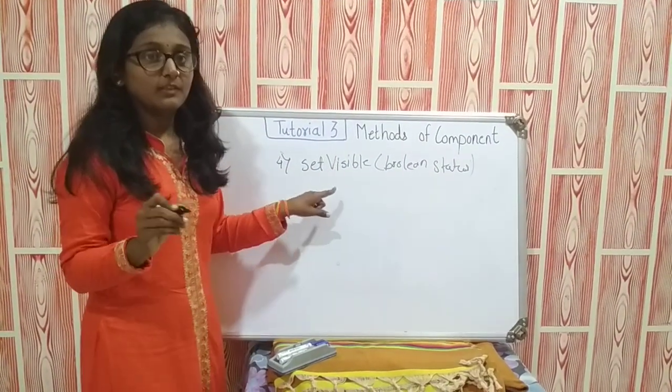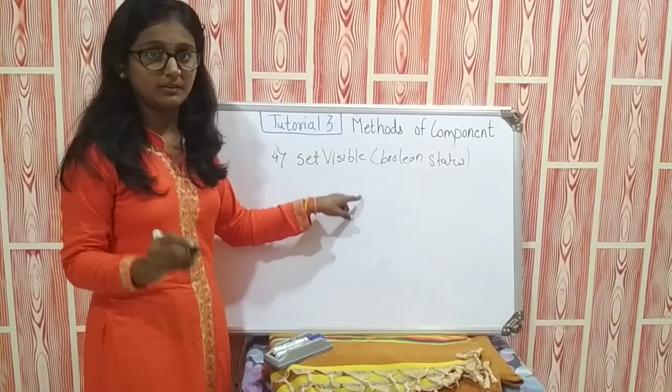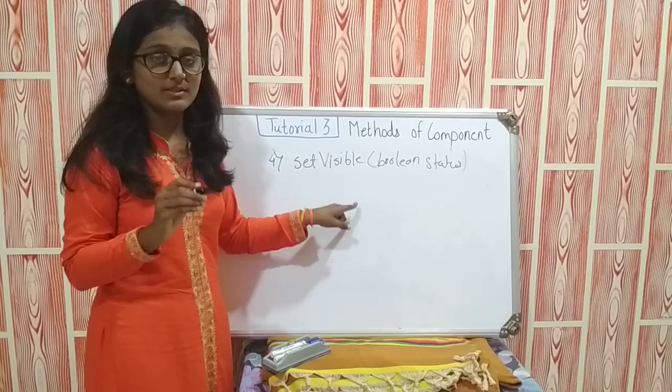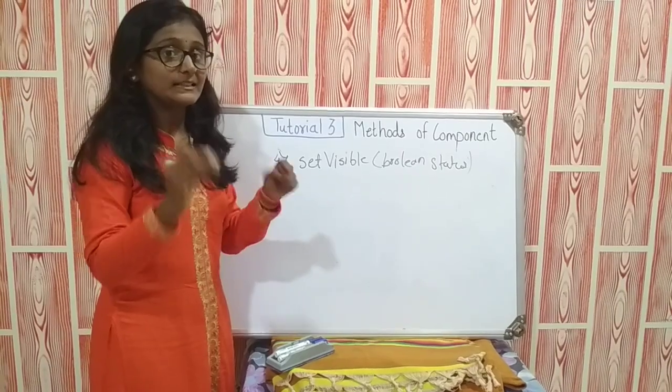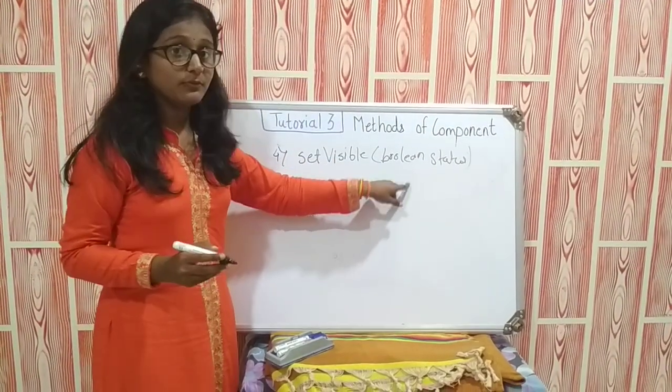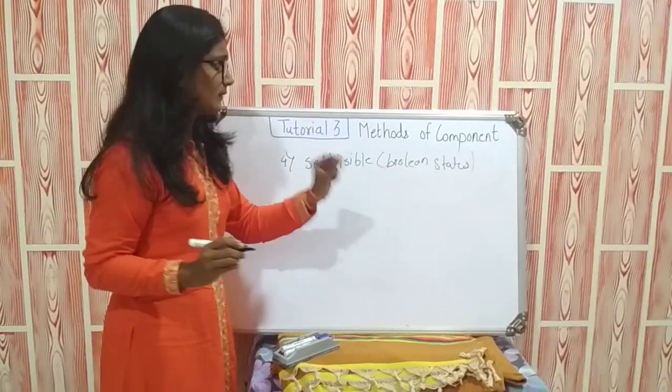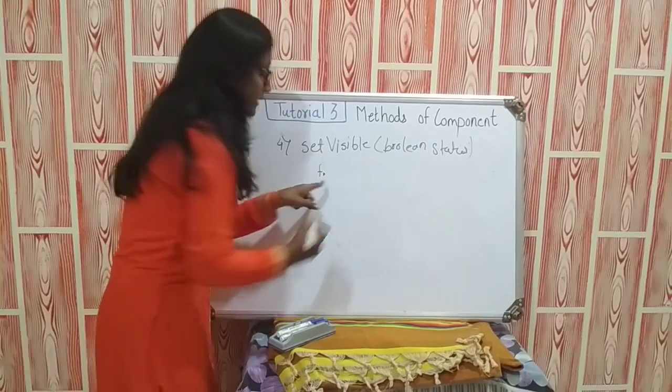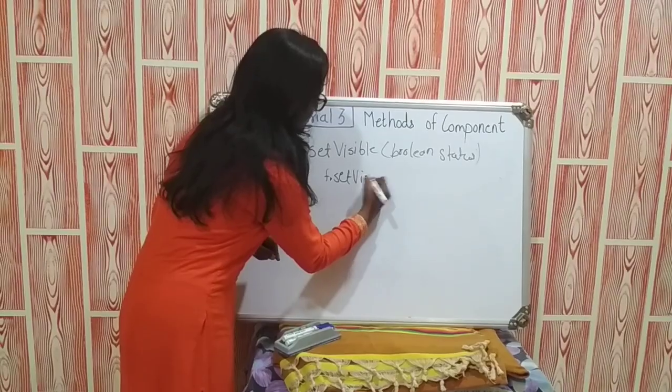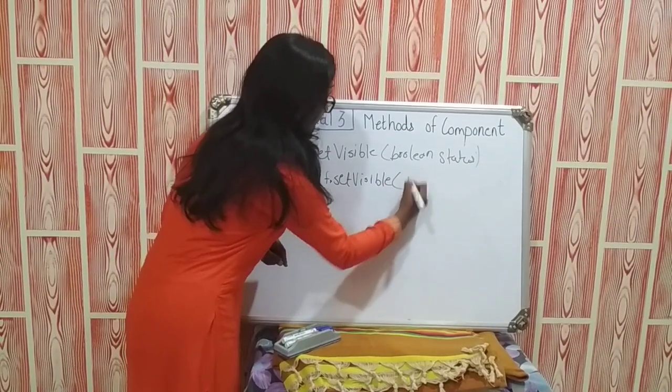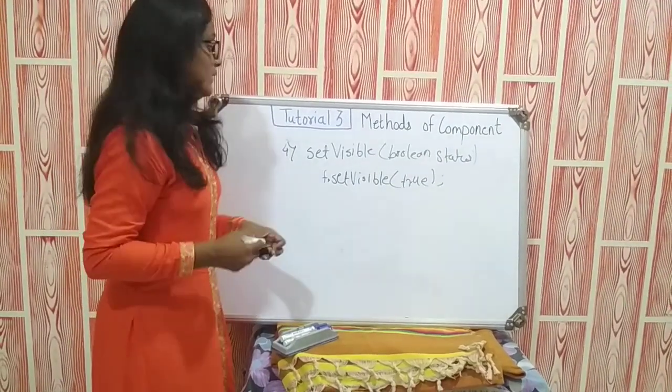My dear friend, this setVisible is compulsory. We have to use this setVisible method. If we don't use this setVisible method, then the frame will not be visible on your window, or you will not see the output. By default, the boolean status is false. How I will use it? F is the object of a frame. I will set it setVisible as true. In this way I will use this in my program.